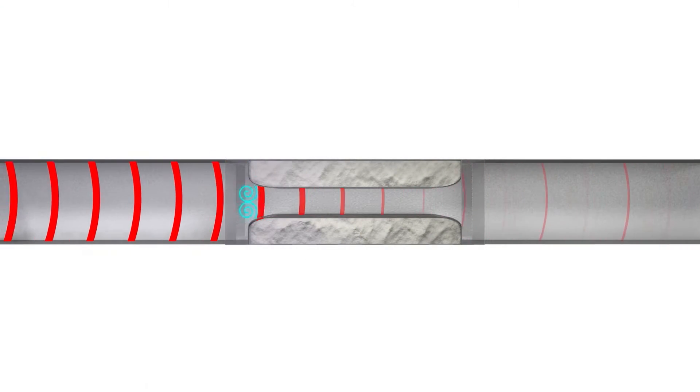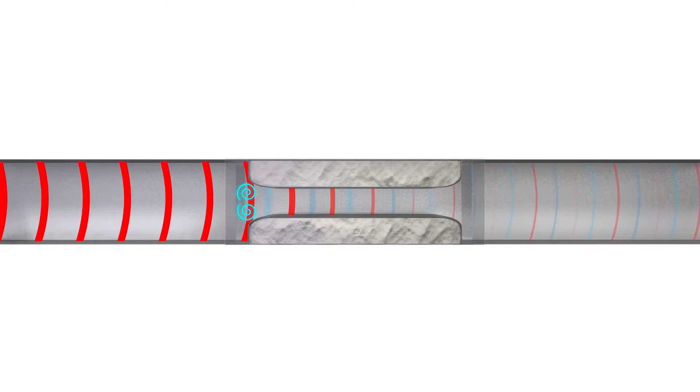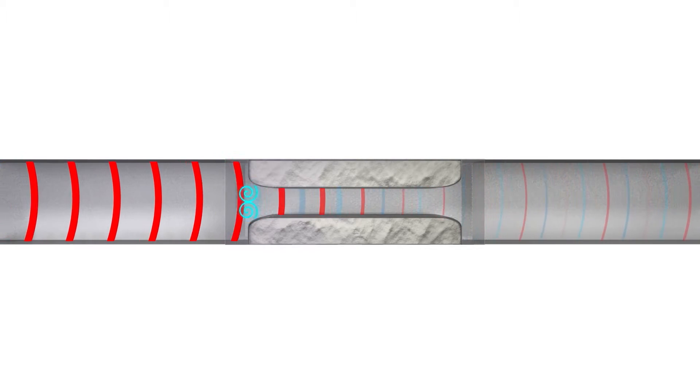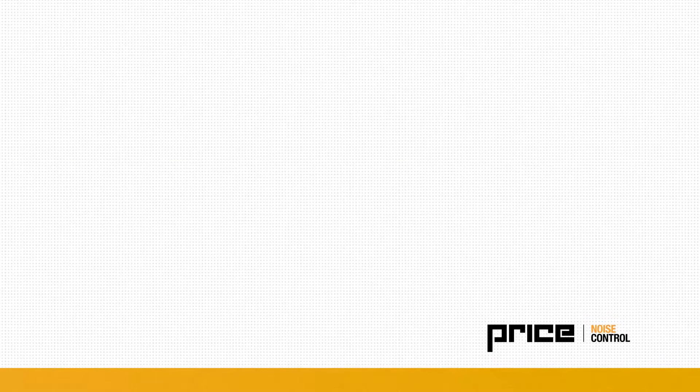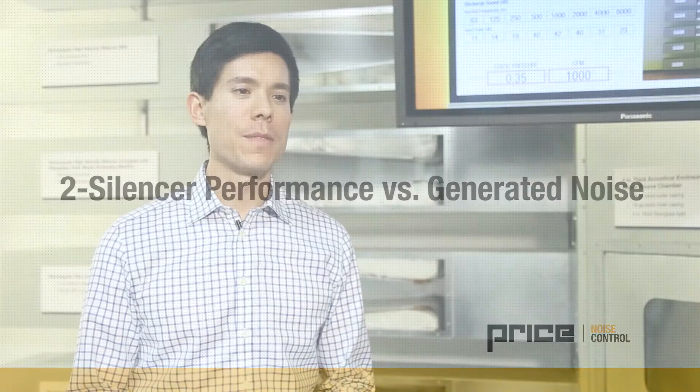Numerous publications outline recommended duct velocities and duct configurations to achieve specific noise levels. In the case for silencers, generated noise is simply the noise generated by air flowing through the silencer. How does generated noise relate to silencer performance?